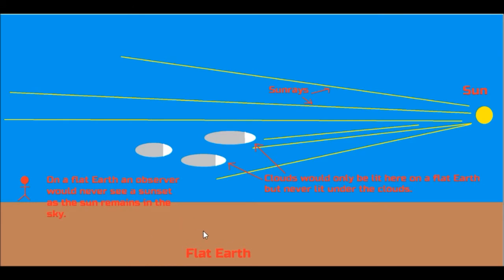Here is a representation of the flat earth version of the sunset. Over here you have the sun, and over here you have the clouds. And over here is the observer. On a flat earth, the sun would always remain in the sky, and it would be above the clouds. And here are the sun rays, and here are the clouds.